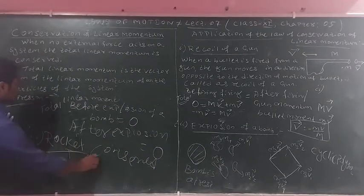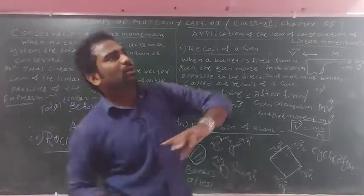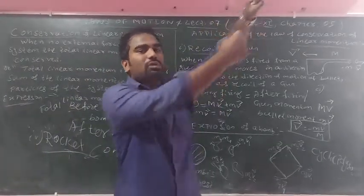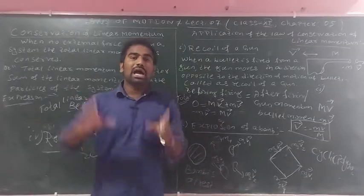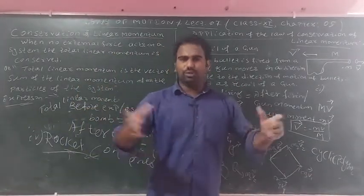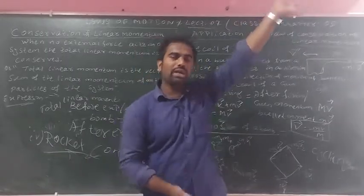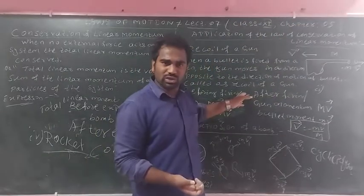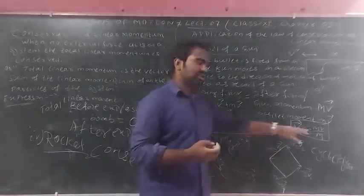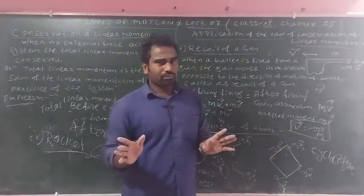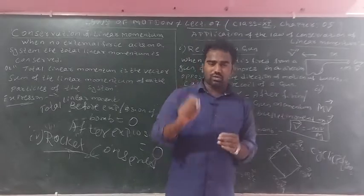The next application is rocket propulsion. The rocket is propelled forward and momentum is conserved. The rocket moves in the forward direction while exhaust gases move in the backward direction. The speed of the rocket is given by V equals minus mv divided by M, similar to the recoil formula.